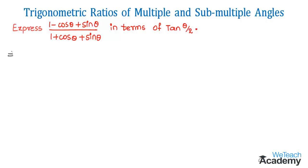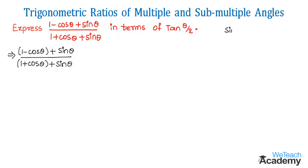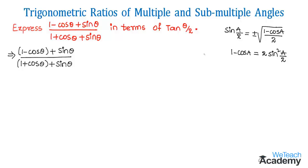First, let us group the first and second terms. By grouping we get (1 minus cos theta plus sin theta) divided by (1 plus cos theta plus sin theta). Here, 1 minus cos theta can be written in terms of sin(theta/2) by using the sub-multiple angle formula: sin(a/2) = ±√((1 minus cos a)/2). Using this formula, 1 minus cos a equals 2 sin²(a/2).